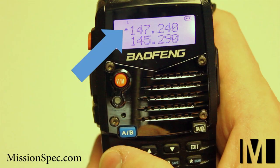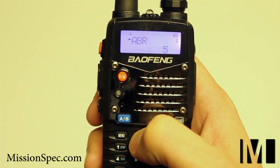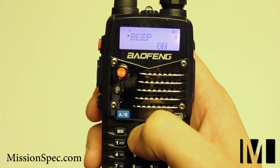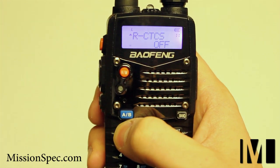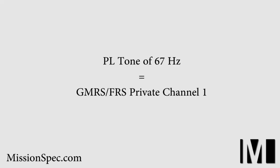Verify that you are operating on the top frequency, which will be indicated by the small chevron to the left of the frequency on your display. To set the receive tone, click Menu. Use the up arrow to navigate to RCTCS. Click Menu. Use the arrow keys to change the variable to 67 Hz. Click Menu again to confirm the setting. You are now set to receive only transmissions that are transmitted with a PL tone of 67 Hz, which corresponds with GMRS FRS Private Channel 1.